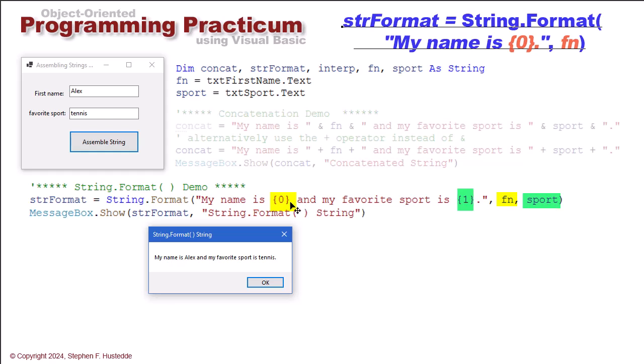By the way, I do not have to put these in order in my string. I could have had this be my name is one and my favorite sport is zero and then swap these two so that sport is zero and fn is one. You can use basically just the order that these are in corresponding to my digits in the placeholders.